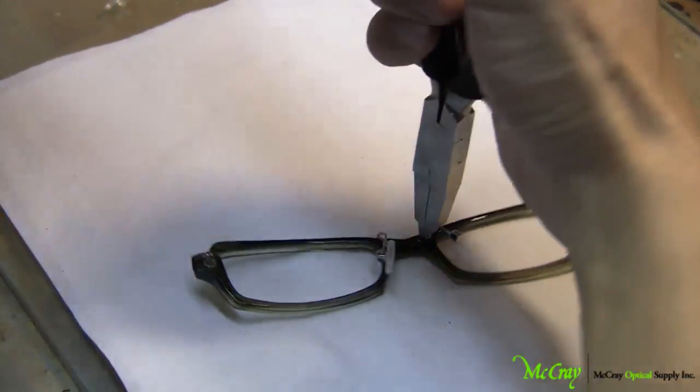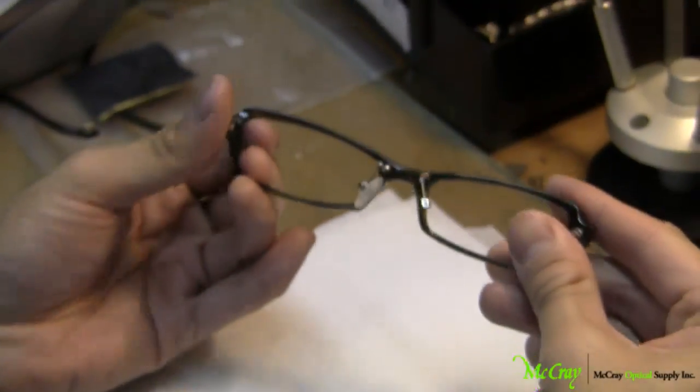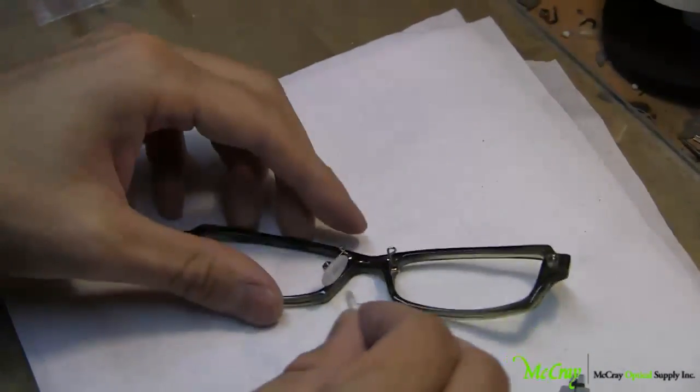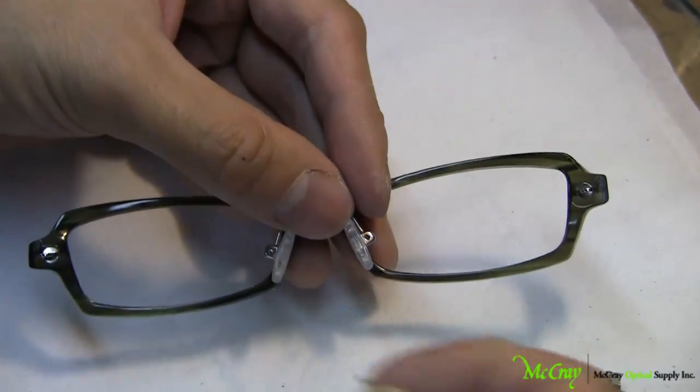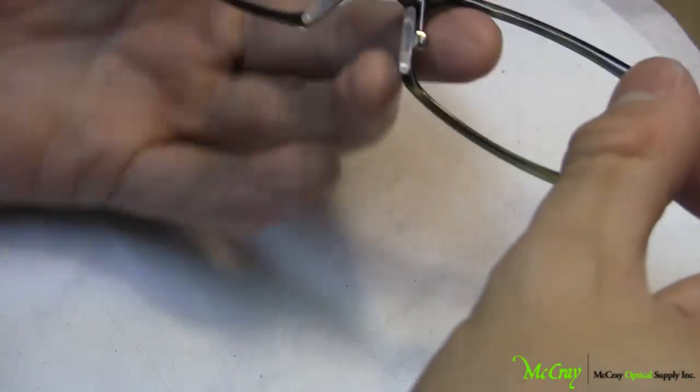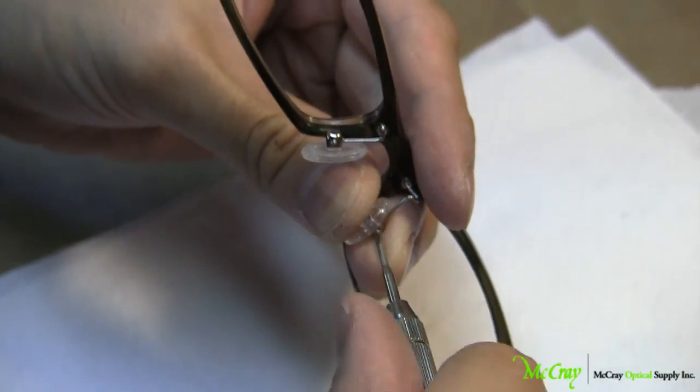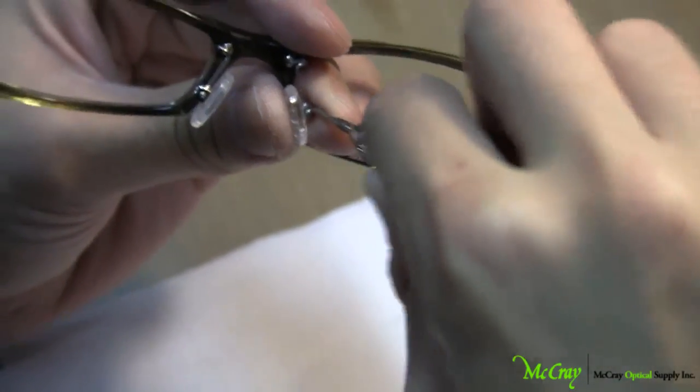Now we're just going to do the right hand side as well. Again, this time I'm not using the nose pad just because it's not necessary. We're simply pushing down onto the titanium frame through the indented hole. And once that's done, we're going to double check to make sure it's nice and firm, and apply the silicon nose pad. And that is a completed titanium pad arm implant.